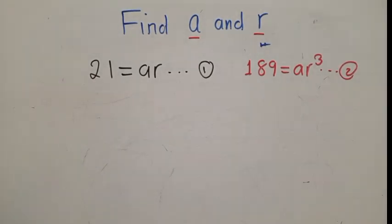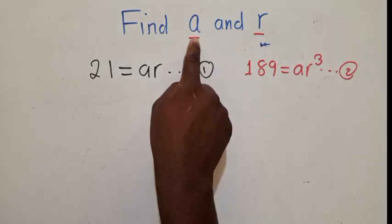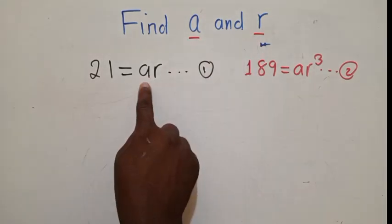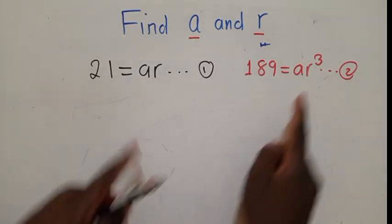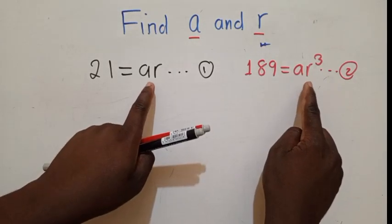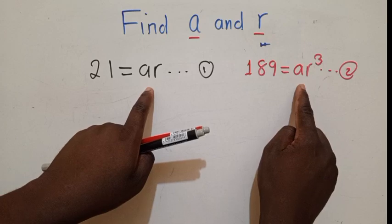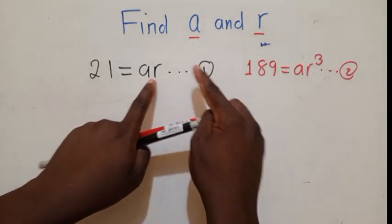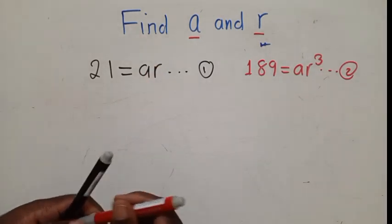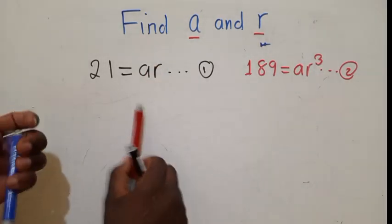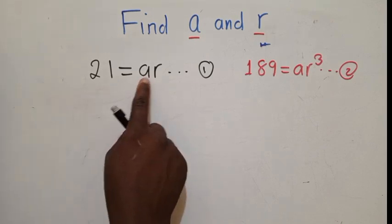So here, look at the question. They want us to find a and r. We've got ar and ar to the power 3. So between the two equations, which one do you think would be easier to work with? This one. Because the highest power here is 1. So I'll go with this one. Either a or r, I'll divide it through.